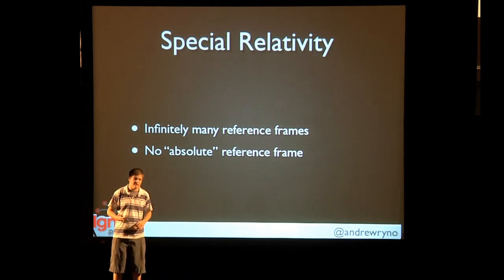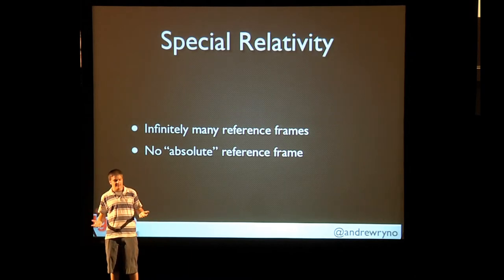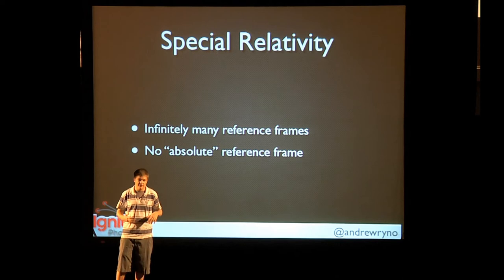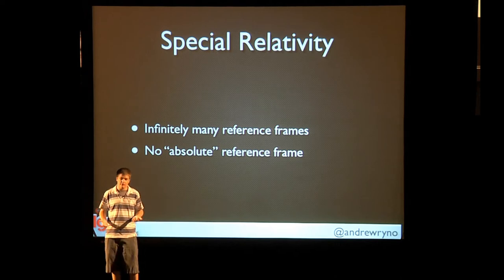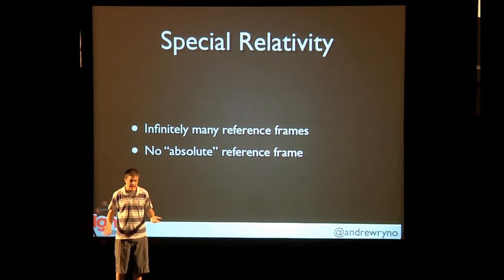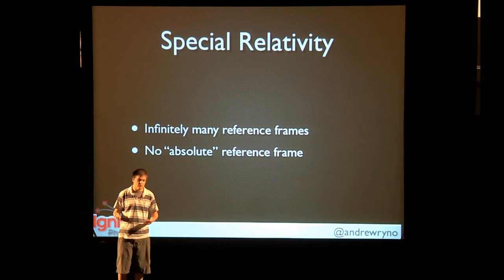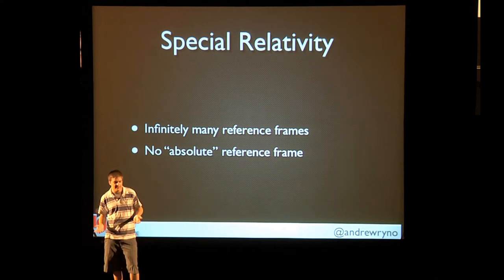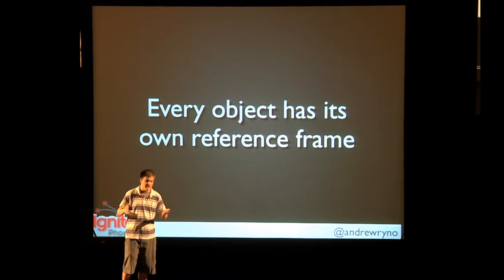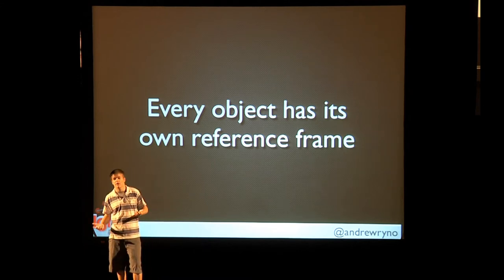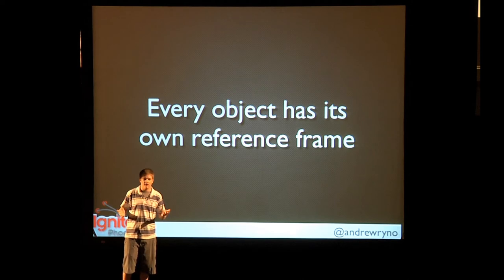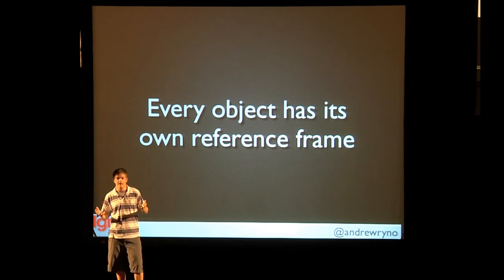One is special relativity, developed by Einstein. Special relativity says that there are infinitely many reference frames in the universe, and that there's no absolute reference frame that is more important than the others. Every object in the universe has its own reference frame — every planet, every star, every person, every atom, every quark in an atom.